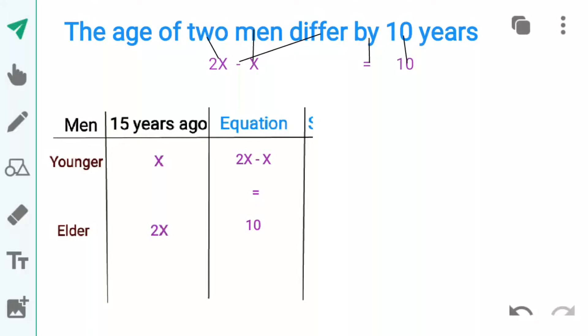Students, ab first statement se equation banayenge. The age of two men differ by 10 years. Means dono ki age ka antar hai 10 saal ka. Dono ki age yaani 2x aur x ka difference hai 10. Aur isse mainne equation box mein likh liya hai.